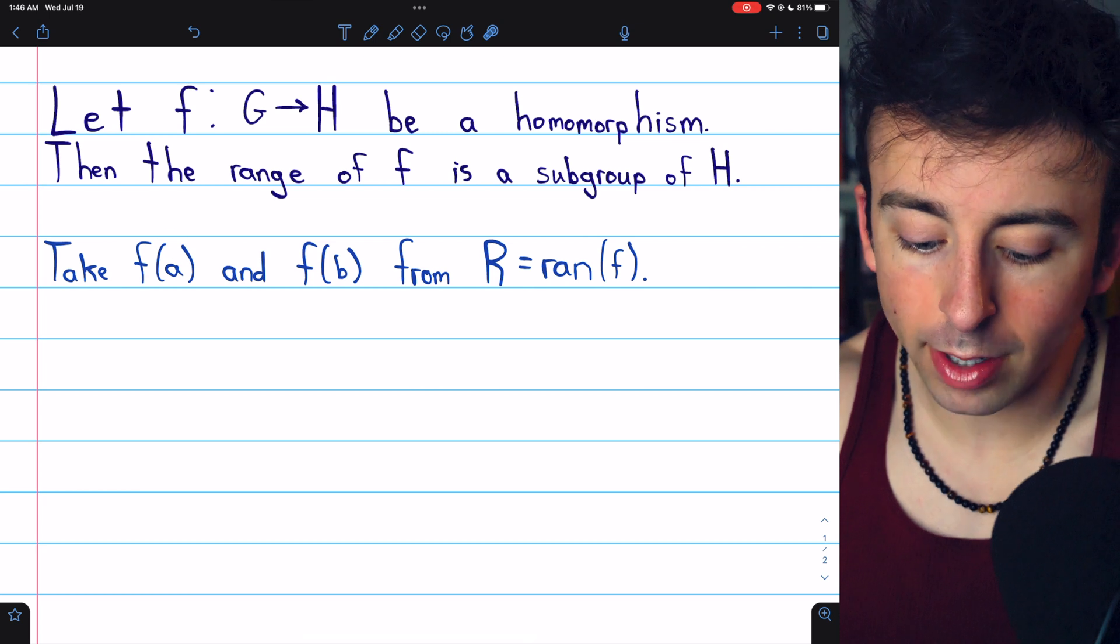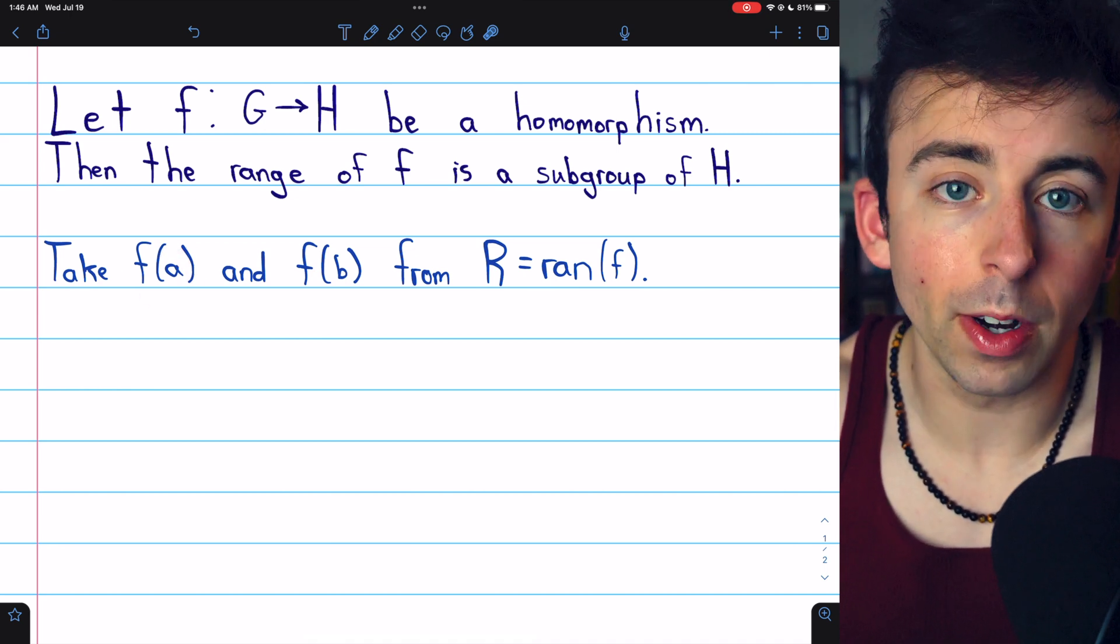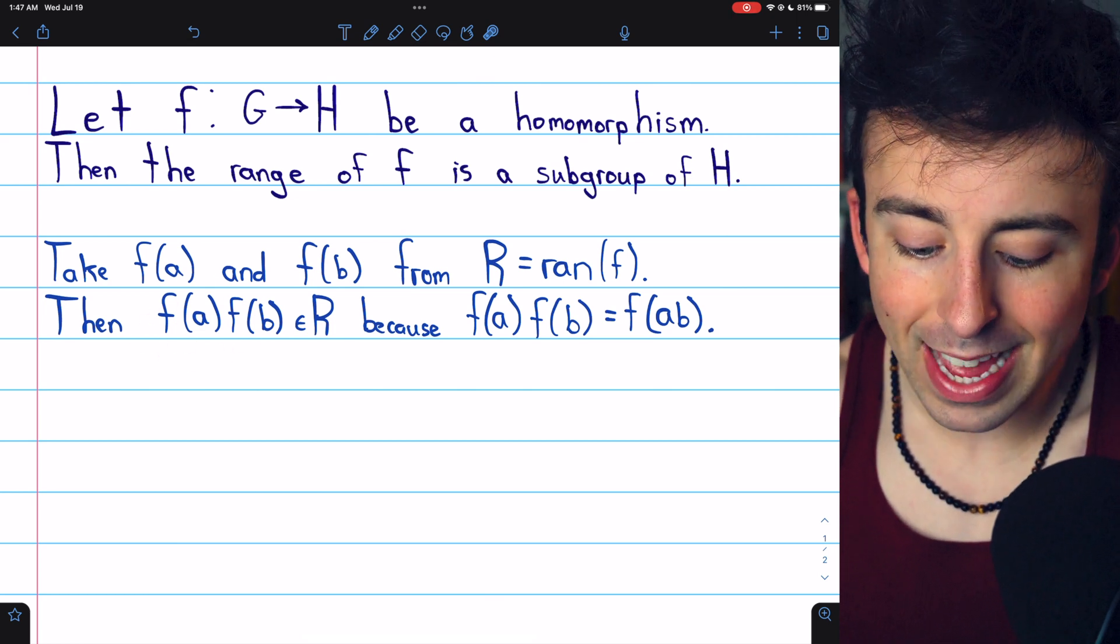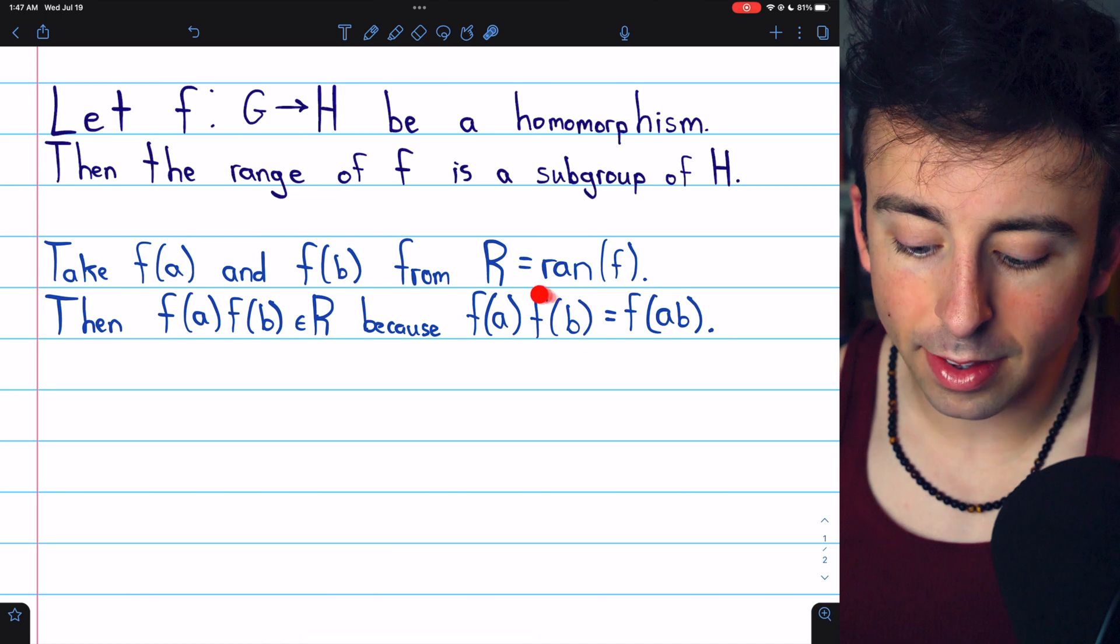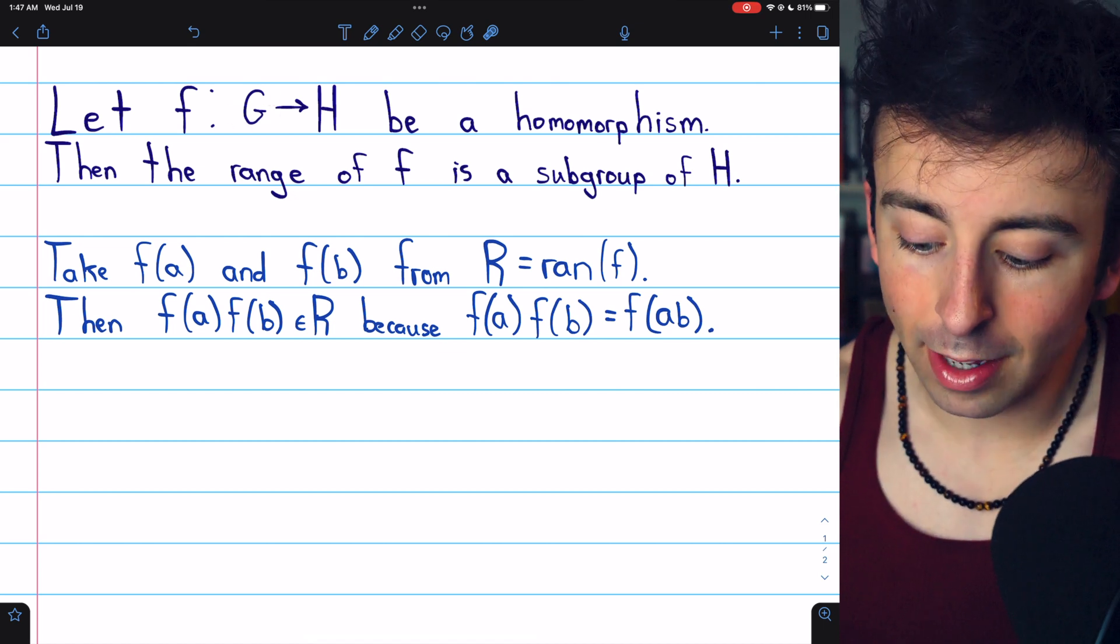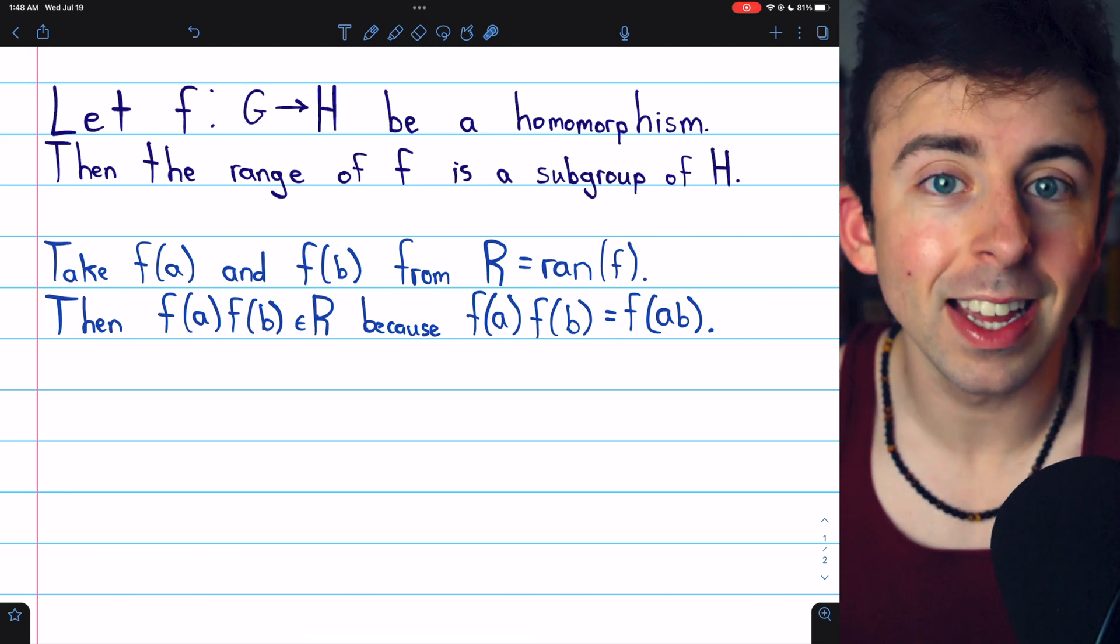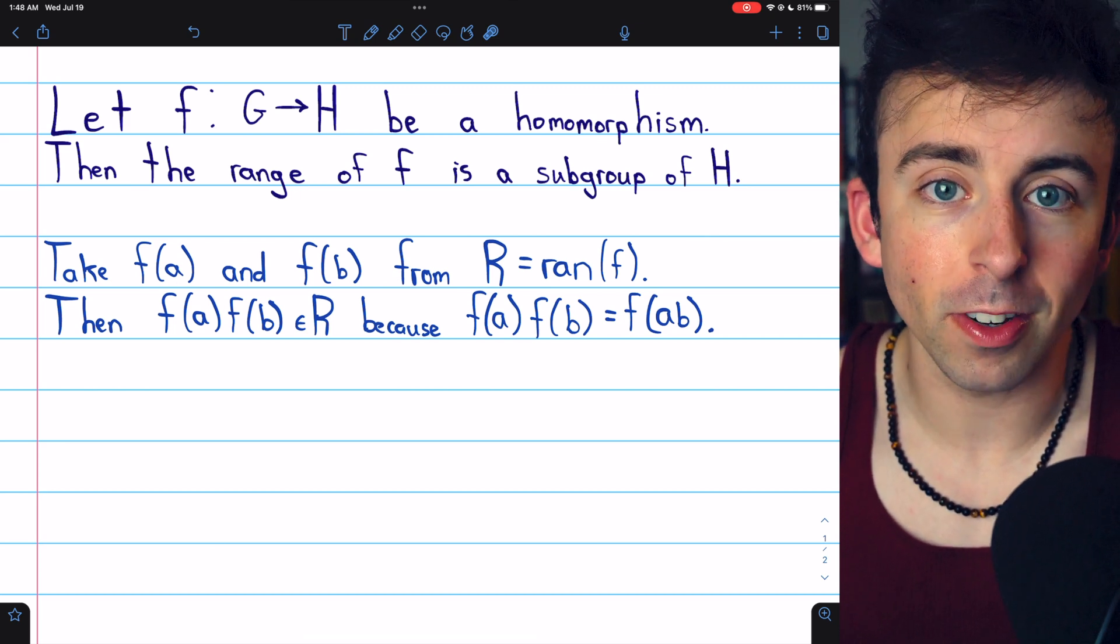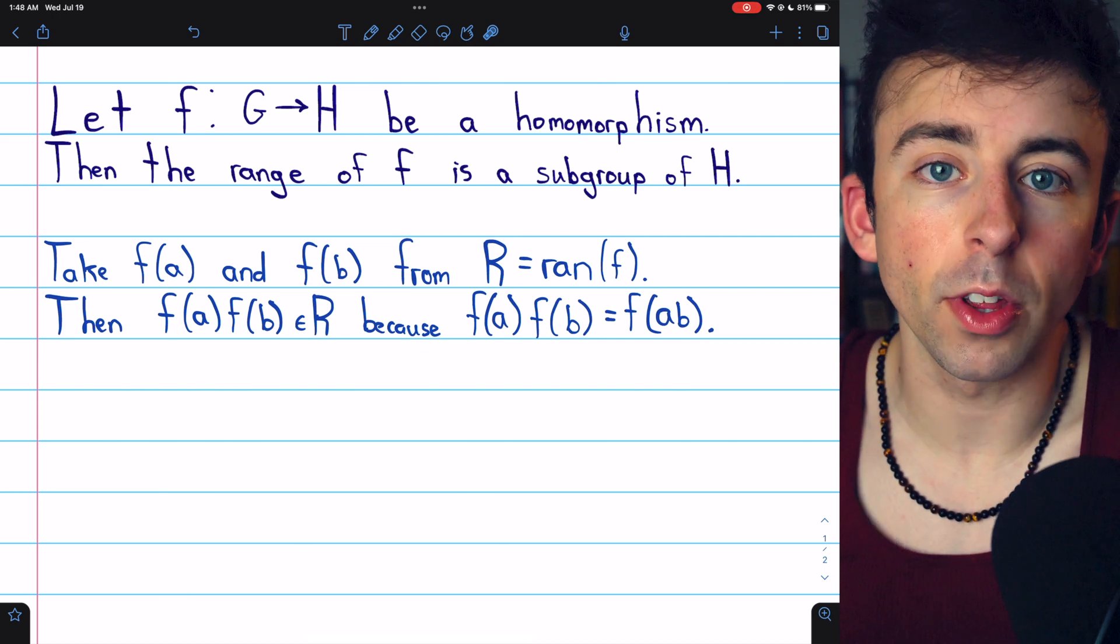Now, we need to show that the product of these arbitrary elements is in R and we need to show that R also has the inverse of one of these arbitrary elements. Quite easily, we know the product of these arbitrary elements F of A times F of B is in the range of F. That's because F is a homomorphism. So F of A times F of B, this product is in fact the image of AB. AB is certainly an element of the group G, so F of AB is in the range of F, which means of course F of A times F of B is in the range as well. So the range is closed with respect to the group operation, where the group operation between F of A and F of B is the operation of H, since that's where those elements are coming from.